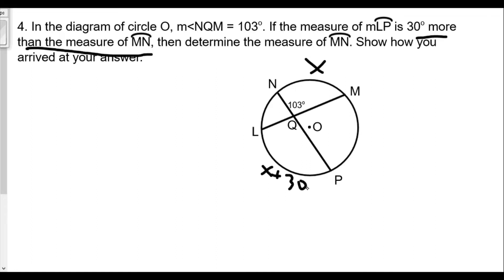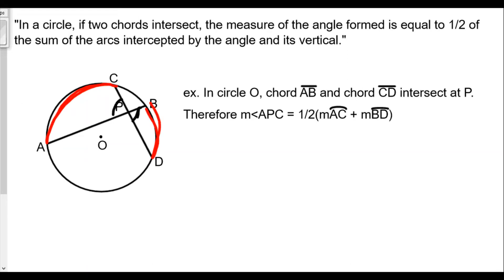If you remember, the idea is that the measure of the angle formed by two chords intersecting is equal to the sum of the arcs intercepted by the angle and its vertical angle. In a circle, two chords intersect. The measure of the angle formed is equal to one half the sum of the arcs intercepted by the angle and its vertical angle.